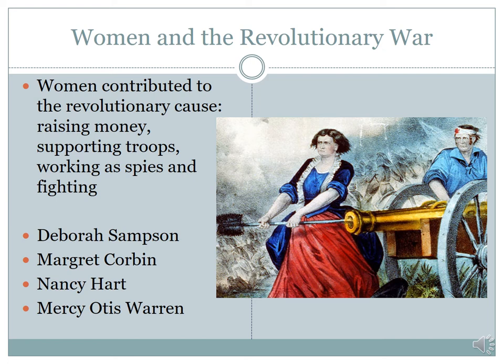Margaret Corbin was the wife of John Corbin, who fought in Washington's army in November of 1776 during the long retreat from Long Island. John Corbin was hurt and his wife ended up taking over and fighting for him on the field in a combat role. Nancy Hart was a woman who was six feet tall, which was huge for a woman back then. She lived on the Georgia frontier and worked for the Continental Army as a spy. She would dress as a man, go into the British camps, gather information, and relay it back to the Continental Army.